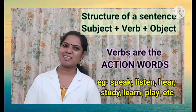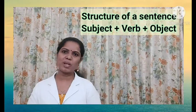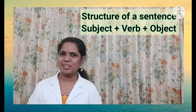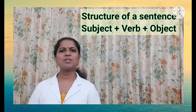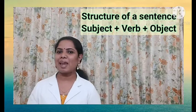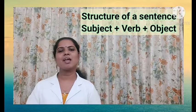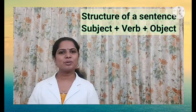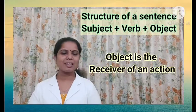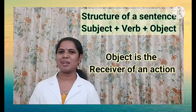Now it's time to learn what is an object in a sentence and how we can identify it. Object is usually a noun or pronoun. Nouns are the naming words — names of anything in this world. Pronouns are words used instead of nouns, for example: he, she, it, they, we, us, etc. An object can be a noun or a pronoun, and it receives the action. The receiver of an action is called the object.